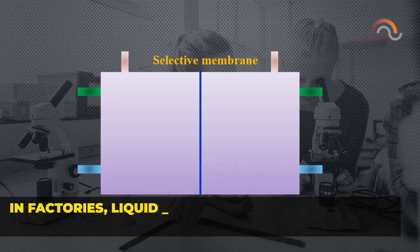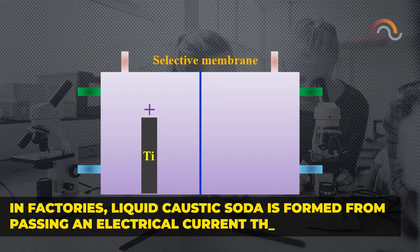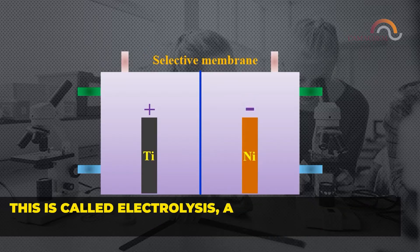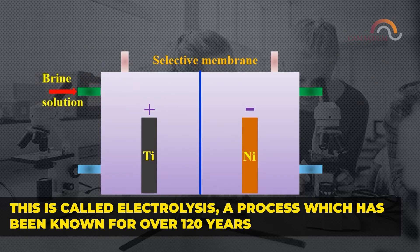In factories, liquid caustic soda is formed by passing electric current through brine. This is called electrolysis, a process which has been known for over 120 years.